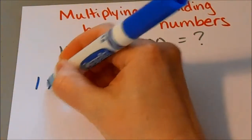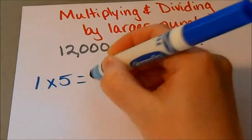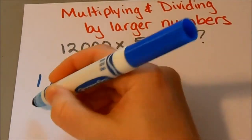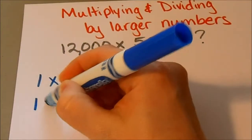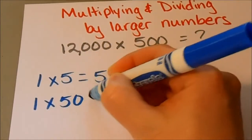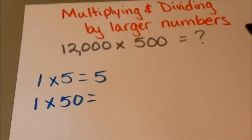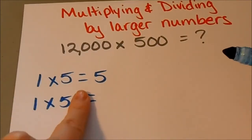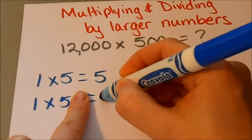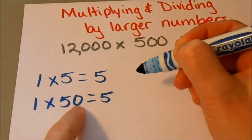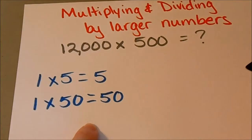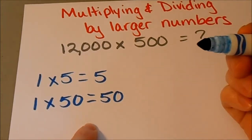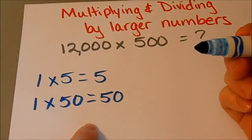Let's just start with 1 times 5. We know that that's 5. If I start wanting to multiply by multiples of 10 — for example, 1 times 50 — this is basically the same problem because I can just cover up that zero and still do 1 times 5. Then however many zeros are in my original problem, I tack on to the end of that number and that becomes my answer. So 1 times 50 is 50.